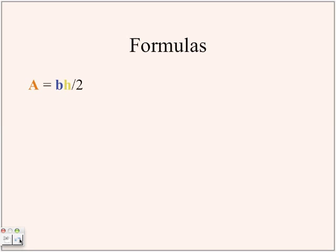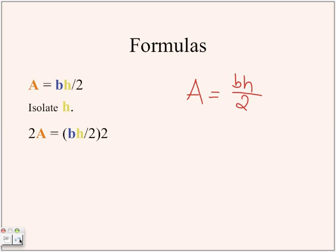Now we're going to work with formulas instead of just equations. This is the formula for the area of a triangle: A equals base times height divided by 2, or one-half of base times height. We want to isolate h, the height. We're going to do that by multiplying each side by 2, because there is bh divided by 2, and you want to multiply to cancel that out.